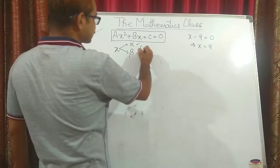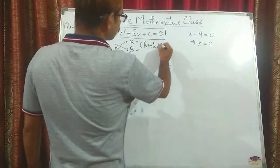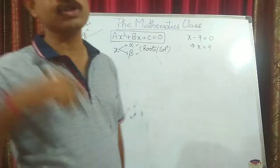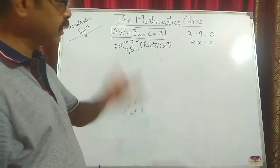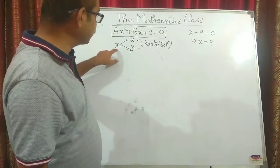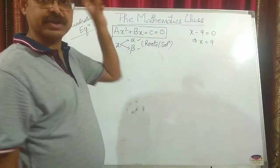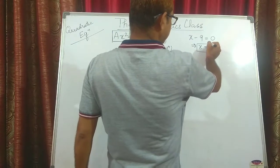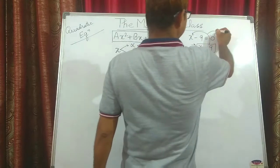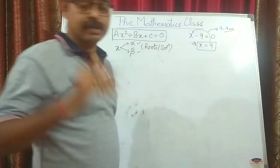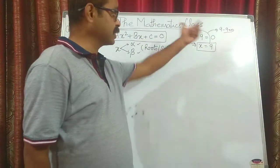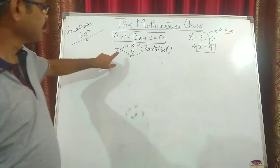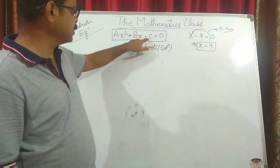These two values, alpha and beta, are called the roots or solutions of the quadratic equation. The meaning of a solution is that when you substitute X as alpha or beta into the given equation, those values must satisfy the equation — meaning left-hand side equals right-hand side. For example, substituting X equals 9 into X minus 9 gives 9 minus 9 equals 0, which satisfies the equation.